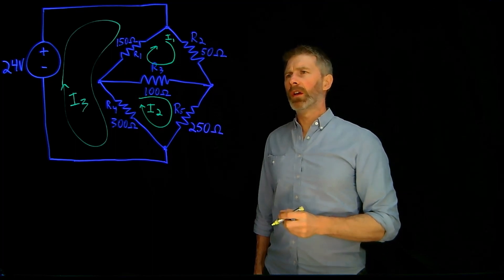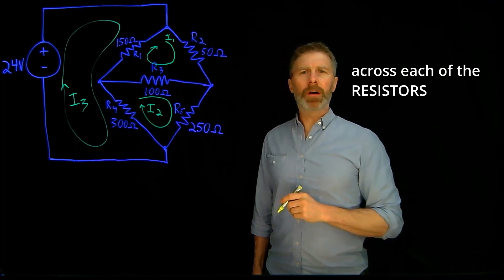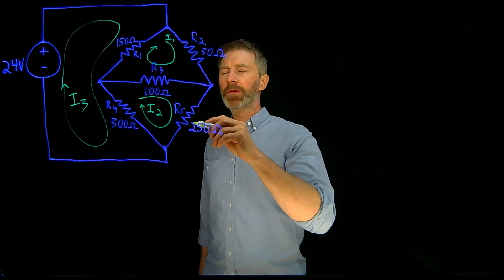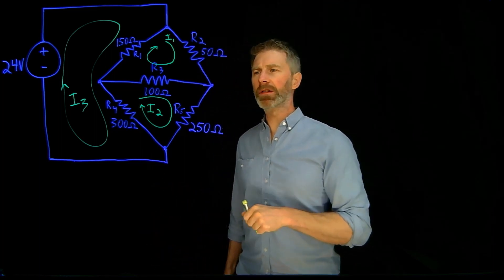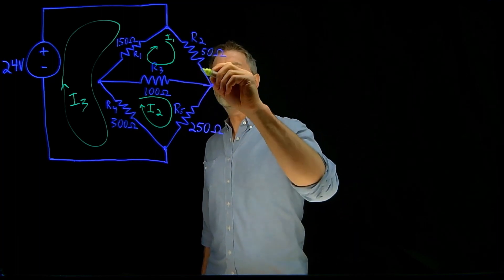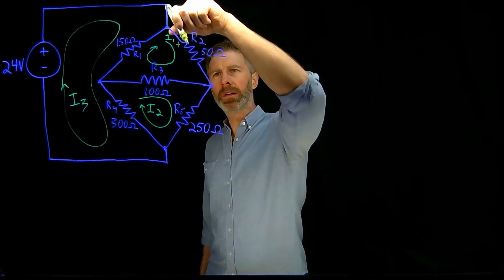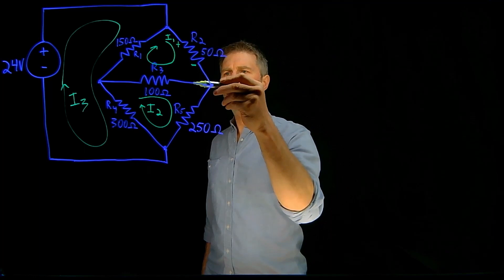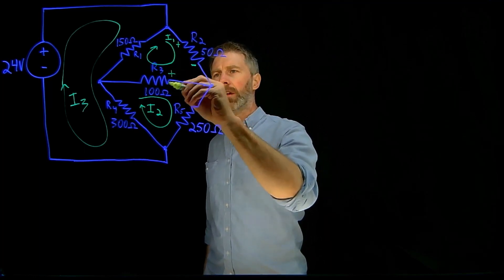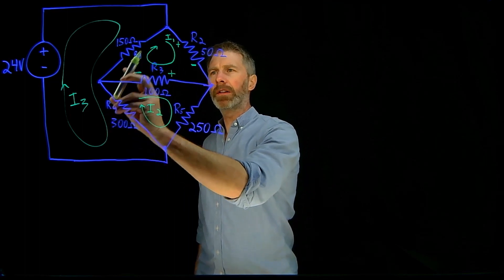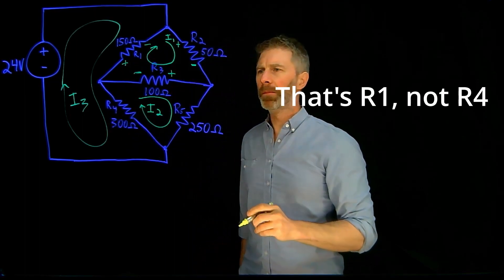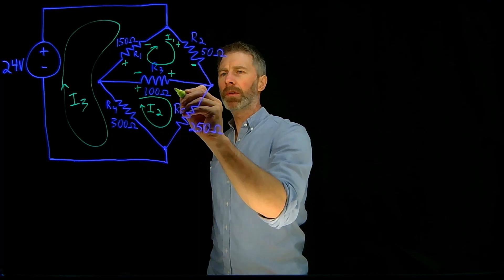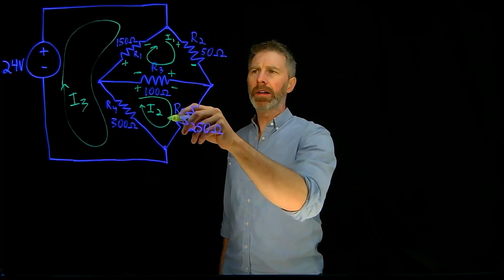The next step is to identify the polarity across each one of the voltages, and we need to do that for each one of the individual currents for each resistor. So if there are two currents going through a resistor, it needs to have two different polarities based on those two currents. Looking at I1, current is going through R2 in that direction so the polarity will be that way, then through R3 and through R4 in that direction, so we get that polarity. For I2, current is going in that direction, so the polarity across R3 is actually opposite for I2 compared to I1.